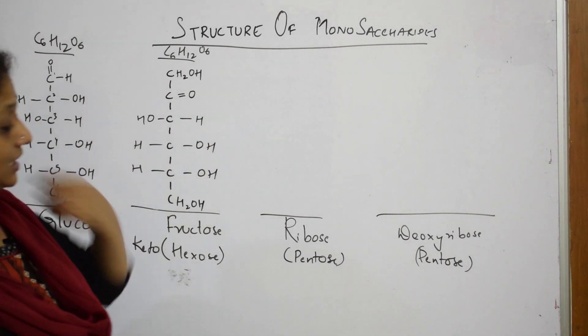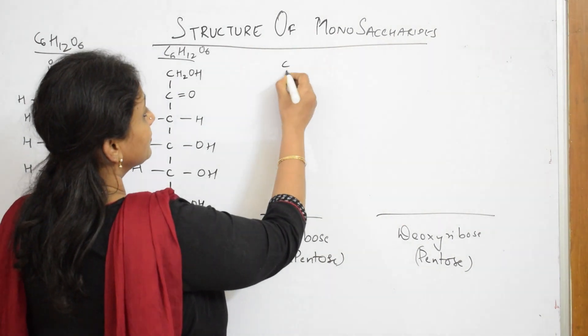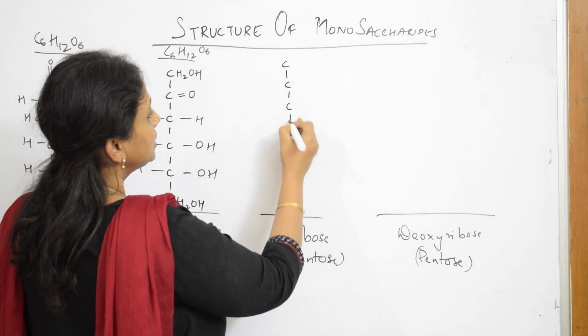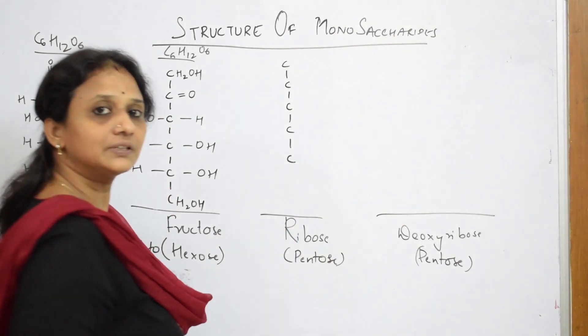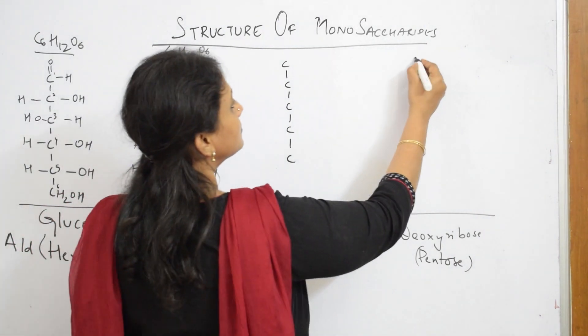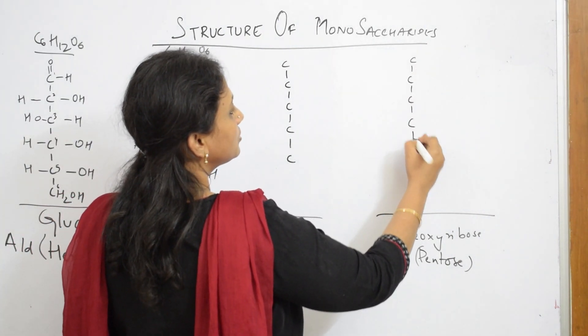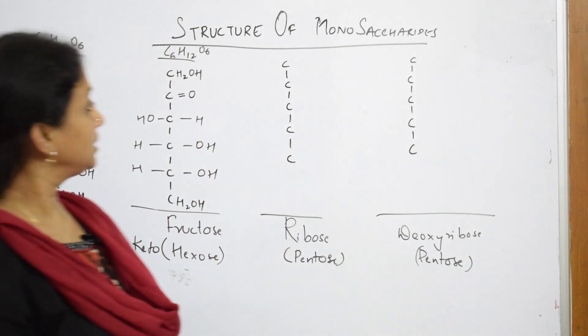Let us come back and see ribose. It is a pentose sugar. Only five carbons. One, two, three, four, five.